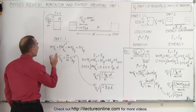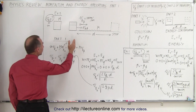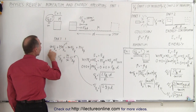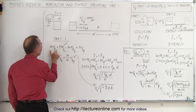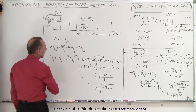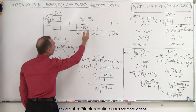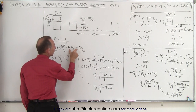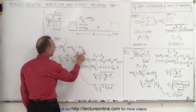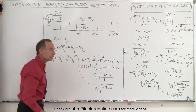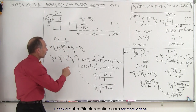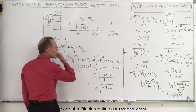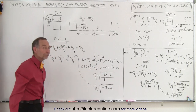Again, we use conservation of momentum: momentum initial equals momentum final. If the block wasn't moving it has no initial momentum, so only the mass times the initial velocity of the bullet contributes to the initial momentum. At the end, both the block and bullet are moving to the right, so each has momentum. Since we know the bullet's final velocity but not the block's final velocity, we use the second equation to figure that out.